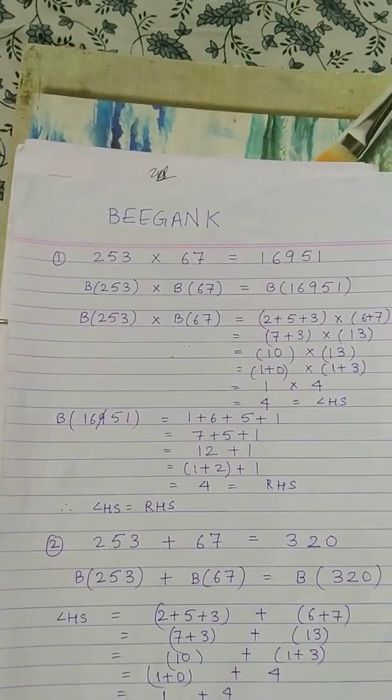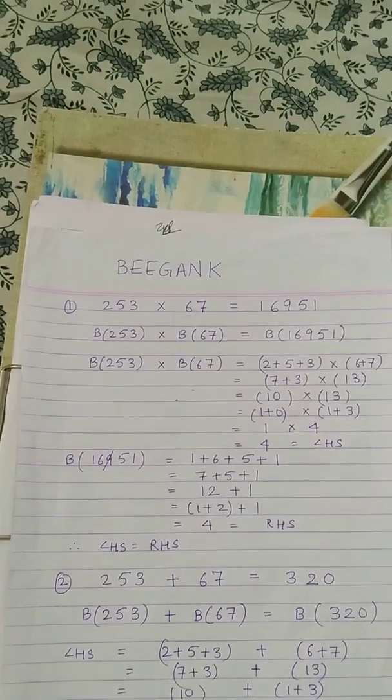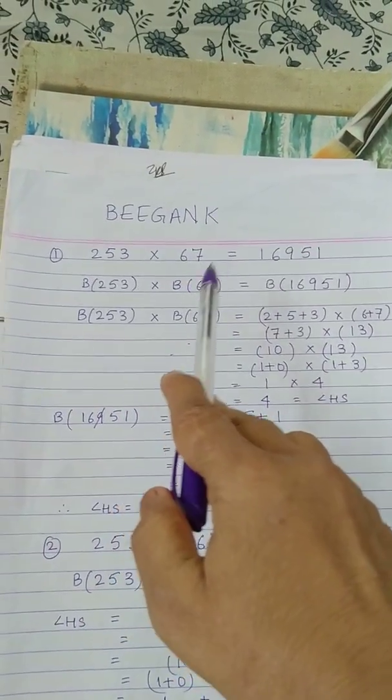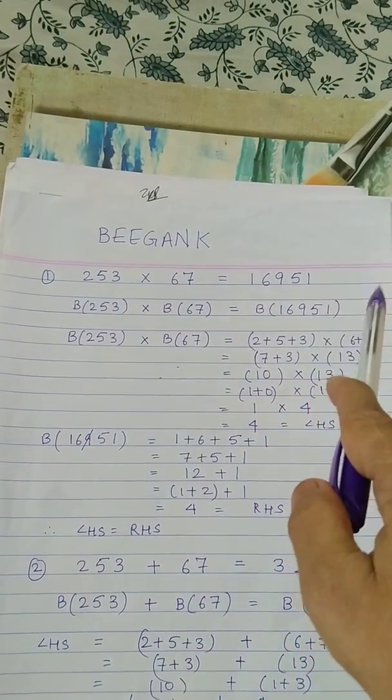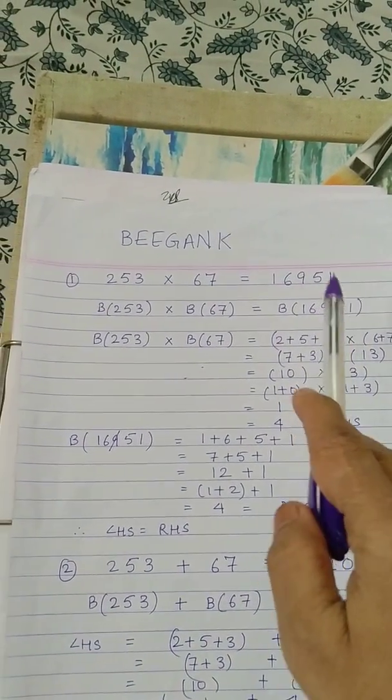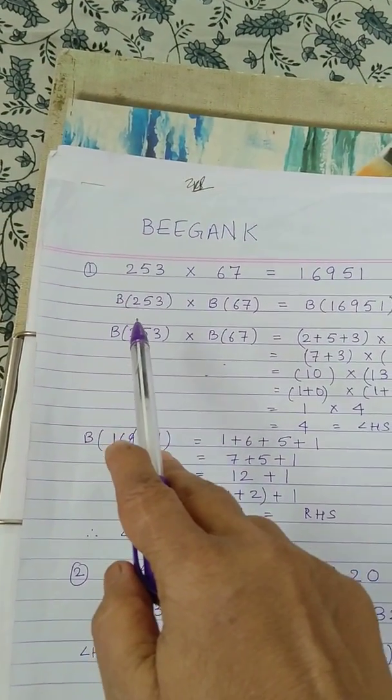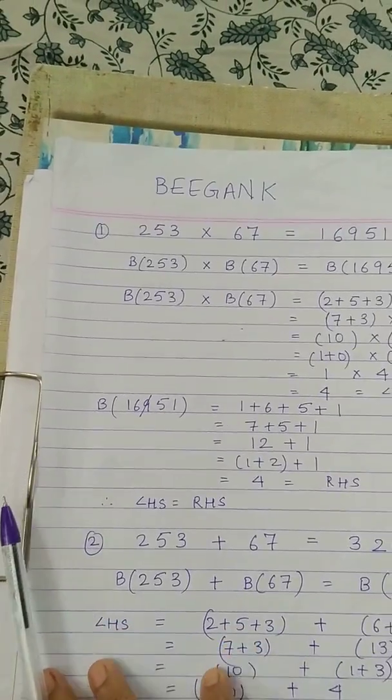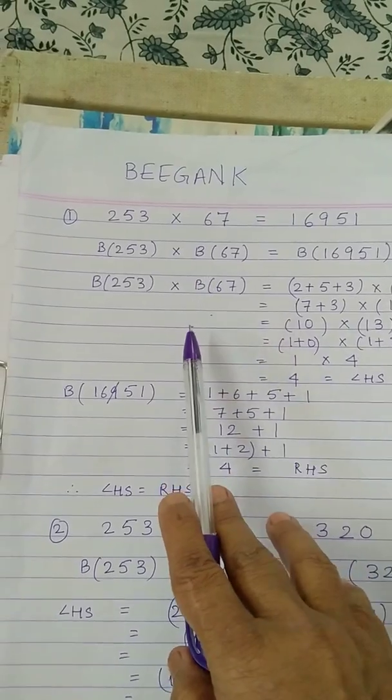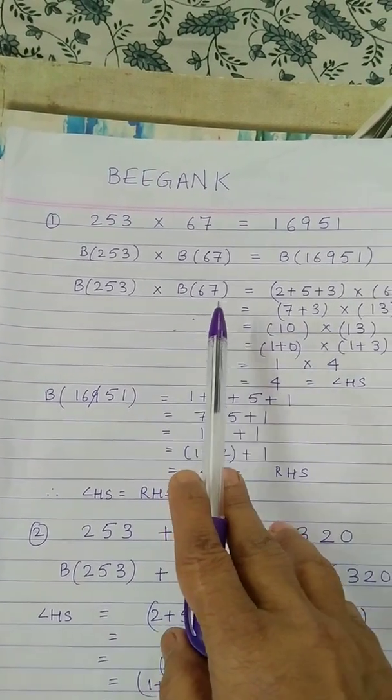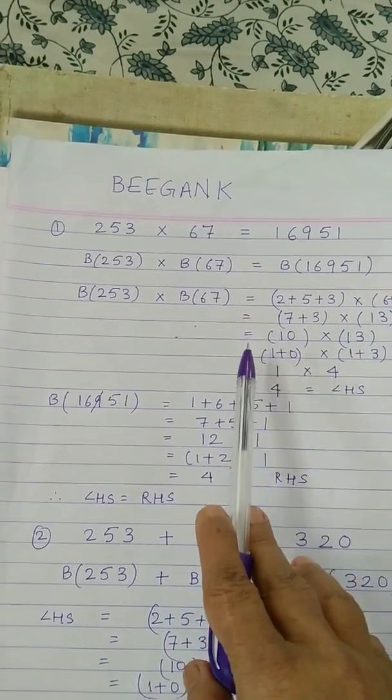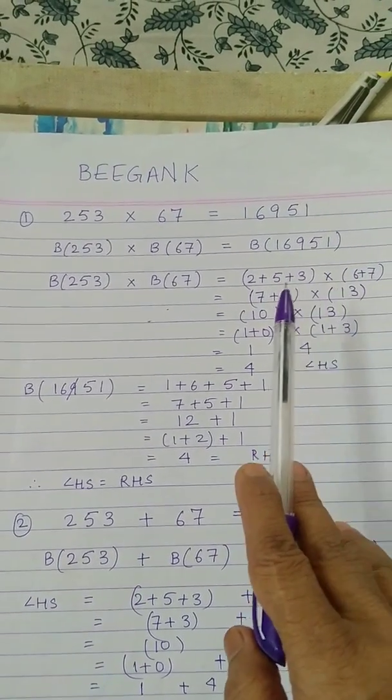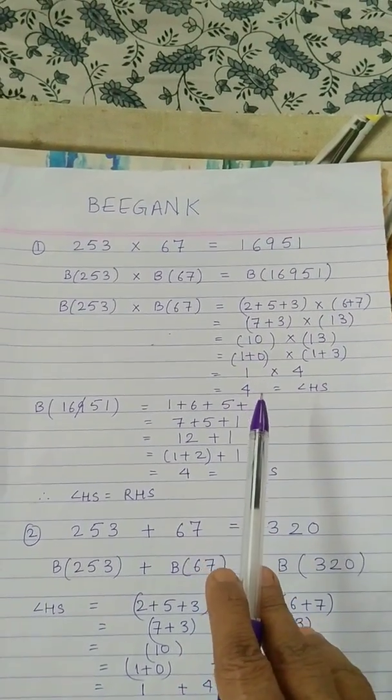Here, first example we have taken is 253 into 67, the answer is 16951. So we find Beejank of 253 into Beejank of 67 and we find Beejank of 16951.